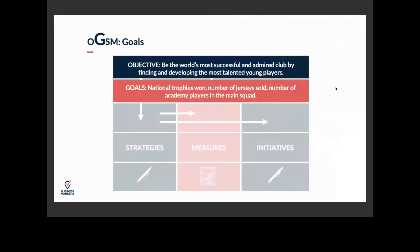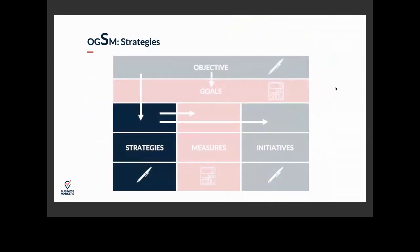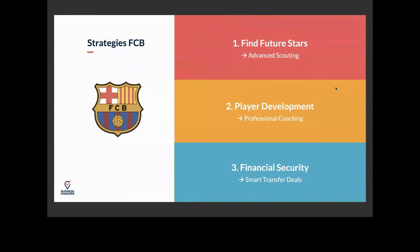We put the goals beneath the objective and reflect on strategies — the building blocks to get there. For Barcelona we have three: find future stars, develop players, and ensure financial security. And we give direction with 'what by how': Find future stars through advanced scouting techniques. Player development through professional coaching models. Financial security through smart transfer deals — we buy young players cheaply and sell them for a lot after a few years.